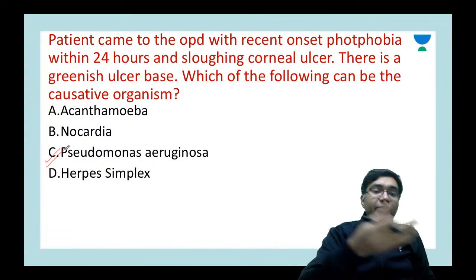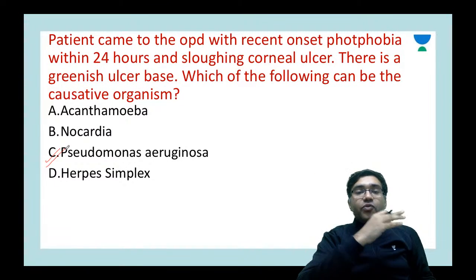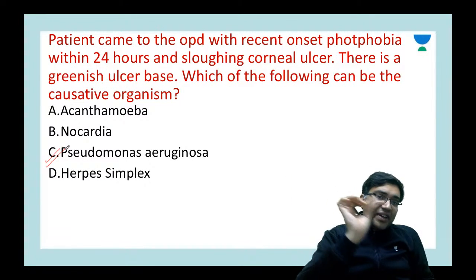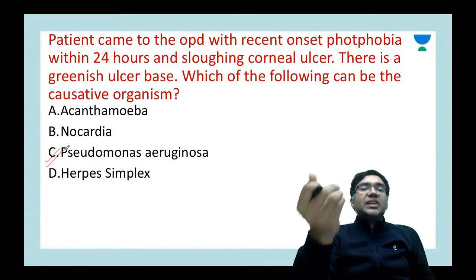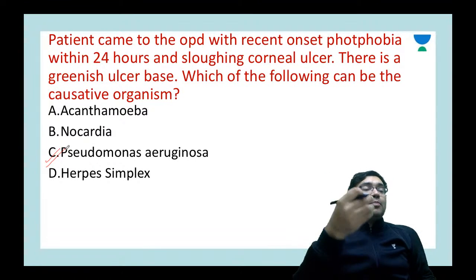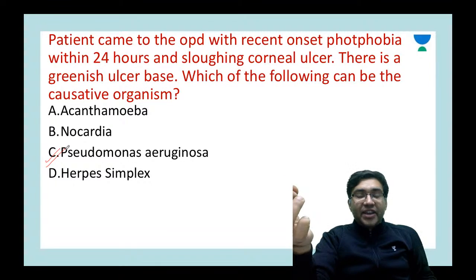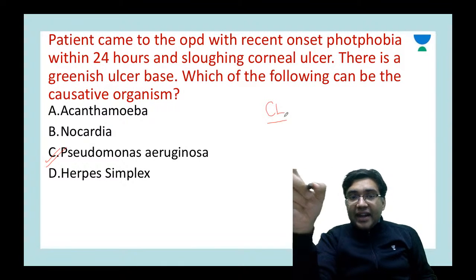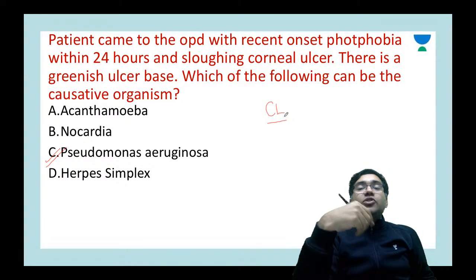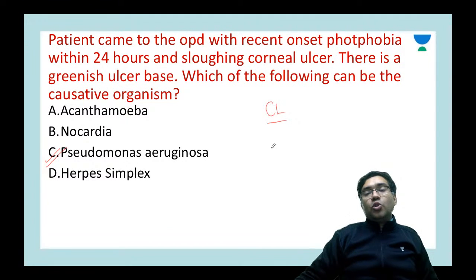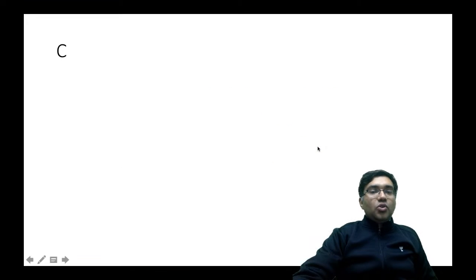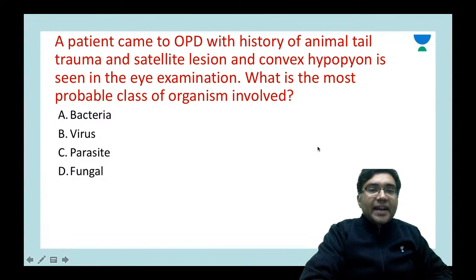Pseudomonas can cause full sloughing of the cornea within a few hours and produces a greenish ulcer base. It is the most common type of infection seen in contact lens users, and it is usually resistant to most antibiotics, making it difficult to treat.